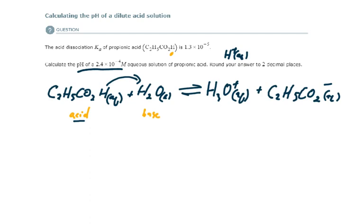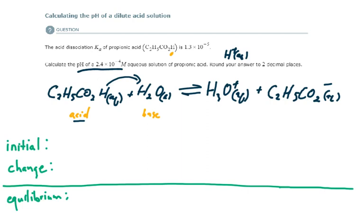Our next step is to develop our ICE table. We are going to look at the initial concentrations of our major species, the change in concentrations, and our end goal is to determine the equilibrium concentrations. We eliminate water, as it is not going to affect the pH significantly. The initial concentration of propionic acid is 2.4 times 10 to the minus 4. The initial concentrations of hydronium and the conjugate base are both 0.